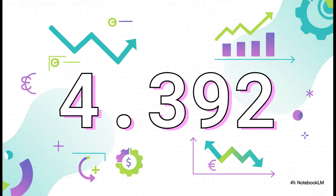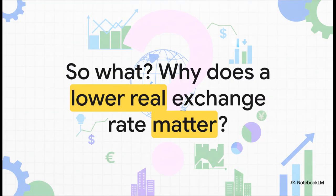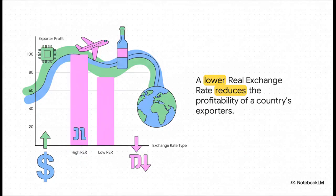That's a pretty big drop, and it tells a really important story. The real exchange rate eroded for one very clear reason: the domestic inflation in Israel was way higher than it was in the U.S. Those higher local prices just diluted the power of the dollars coming in. So a number went down — but so what? Why should anyone care? Well, it turns out this has a massive impact, especially if you're trying to run a business that sells things abroad.